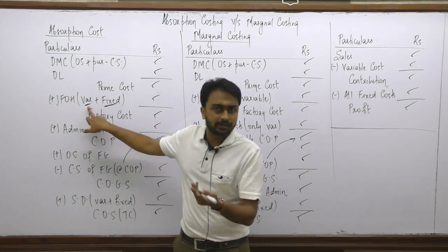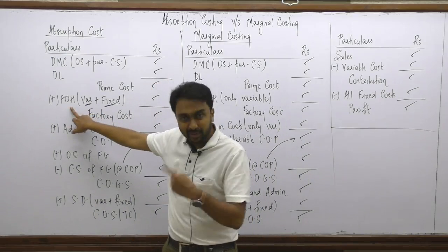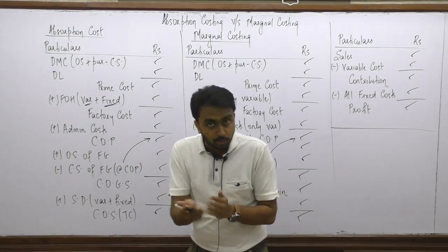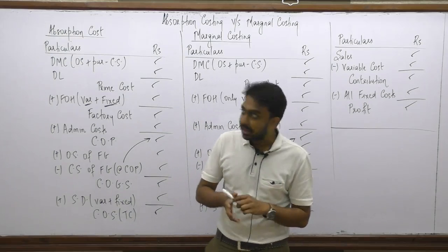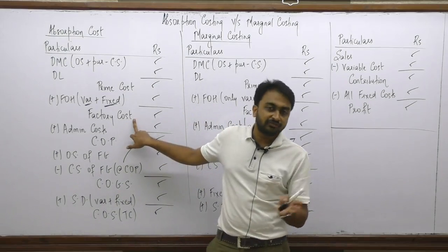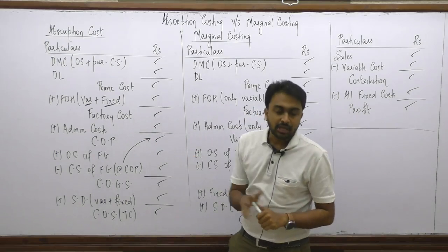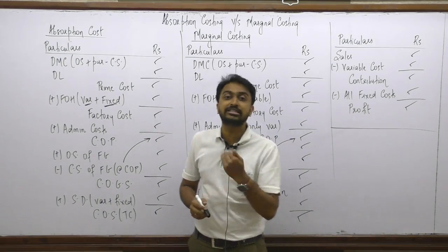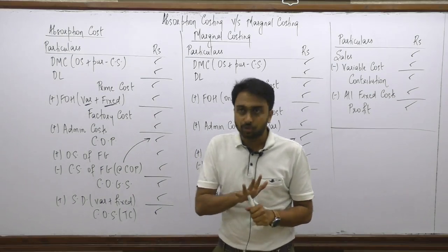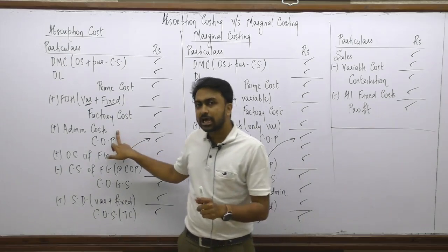Variable overheads are never absorbed — they are always incurred. After adding factory overheads, we get the factory cost. Strictly speaking, this is the gross factory cost. We also adjust for opening WIP and subtract closing WIP to get the net factory cost. For simplicity, let's assume no work in progress, so gross factory cost equals factory cost. To factory cost, we add admin costs. Admin costs are generally fixed in nature because they are office costs, which are typically indirect and fixed.